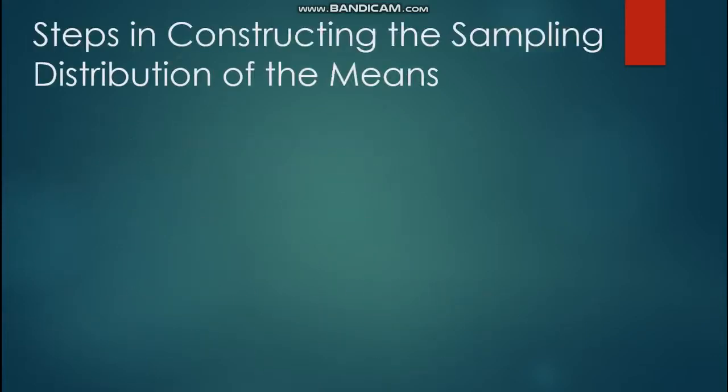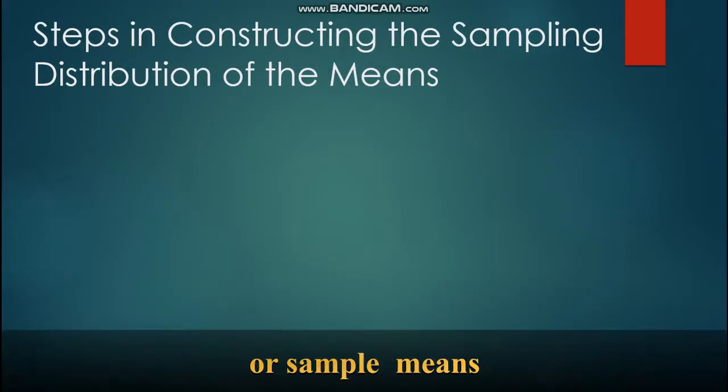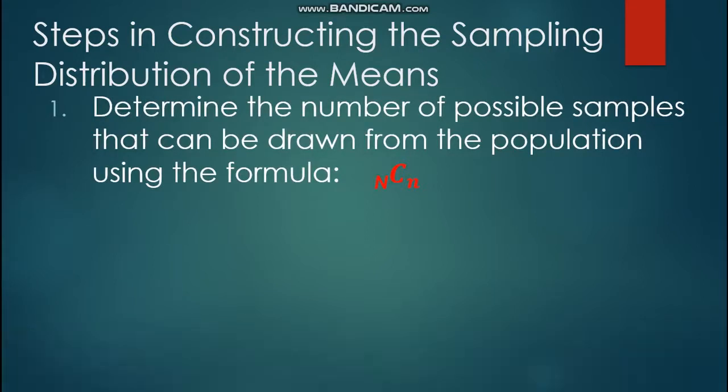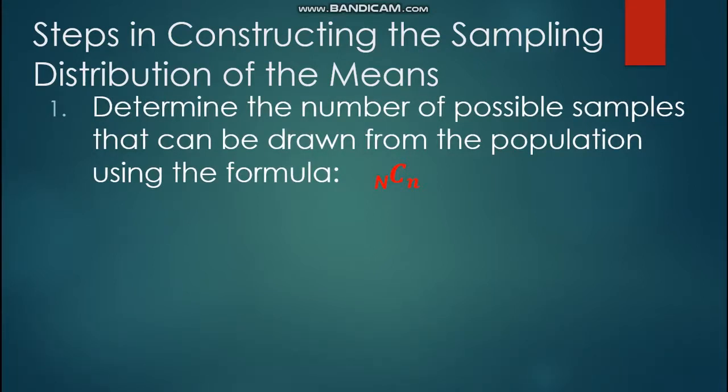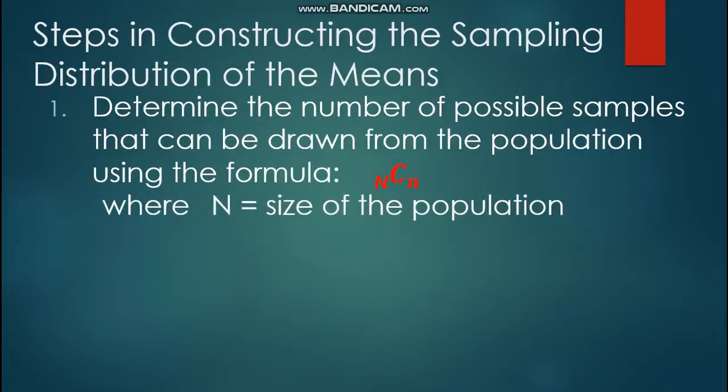But first, let me give you the steps in constructing the sampling distribution of the means. Step number one: determine the number of possible samples that can be drawn from the population using the formula N combination n. This is a combination formula where N is the size of the population and n is the size of the sample. The examples I'll give you will use finite populations.